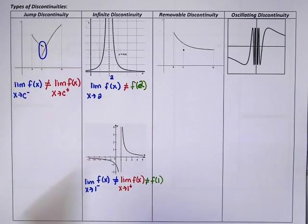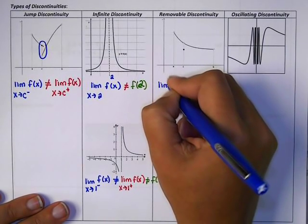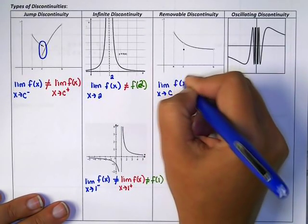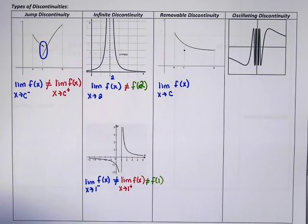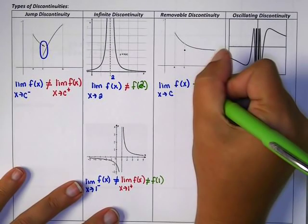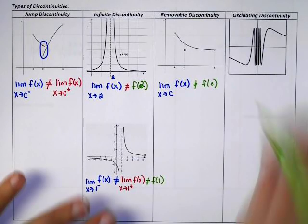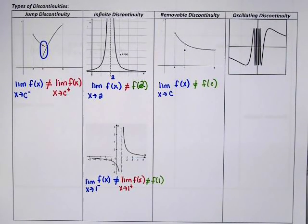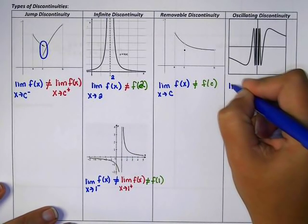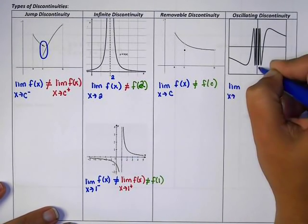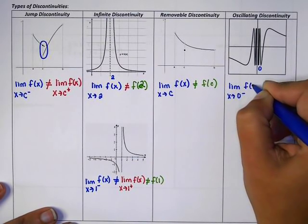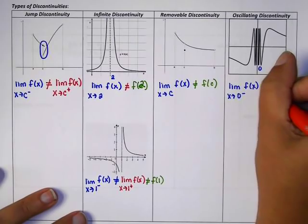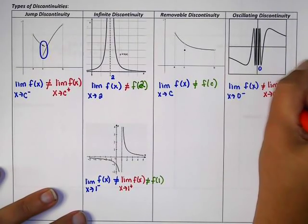For a removable discontinuity — a hole — the two sides of the limit do match, so I use a two-sided limit and say it does not equal the actual function value since the closed circle is somewhere else. For an oscillating discontinuity, the two sides of the limit don't match — they never agree. So the limit as X approaches 0 from the left does not equal the limit as X approaches 0 from the right.